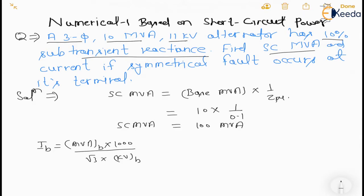You can directly apply this formula or you can calculate via conventional method S is equal to root 3 VLIL. So IB will be equal to 10 into 1000 upon root 3 into KVB means 11 KV. So this is 0.5248 kilo ampere.